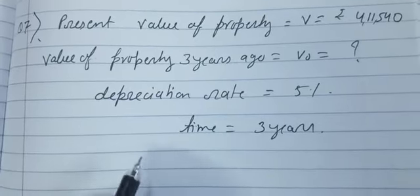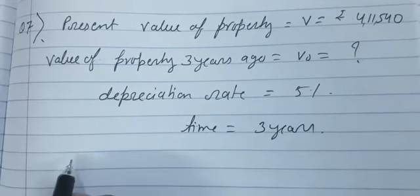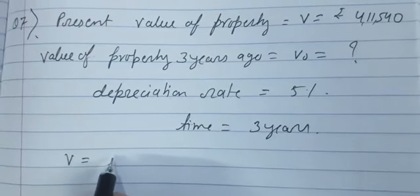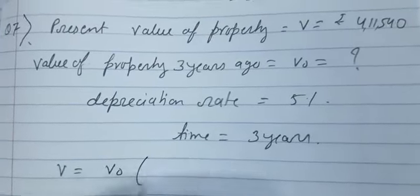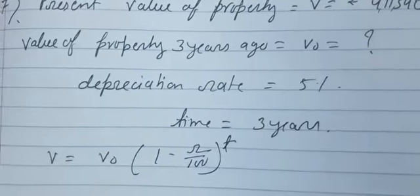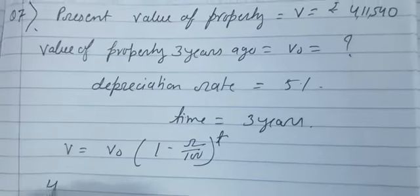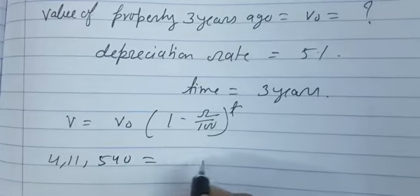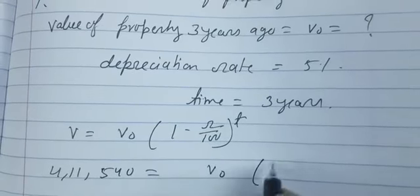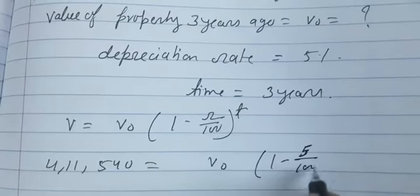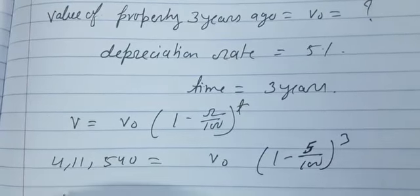So we are going to put the value to get the answer. V is equals to, this is the formula for depreciation: V equals V₀ within bracket 1 minus R upon 100 to the power T. V is equal to 4,11,540, V₀ we have to find out, 1 minus 5 upon 100 to the power 3.